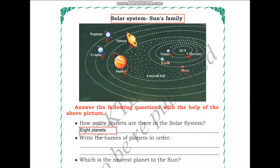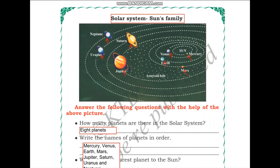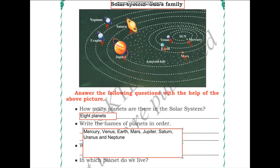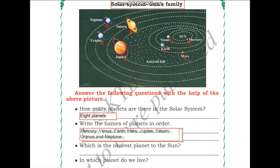Next, write the names of the planets in order. The planets in order are: Mercury, Venus, Earth, Mars, Jupiter, Saturn, Uranus, and Neptune. You can learn the names of these planets in order by remembering the first letter of each planet.